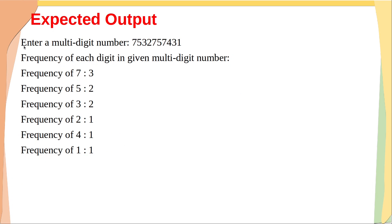The expected output: once you print 'enter a multi-digit number', the user enters a number which is read as a string. Then the frequency of each digit is printed. For example, frequency of 7 is 3 because 7 appears three times, frequency of 5 is 2, frequency of 3 is 2, and frequency of 2, 4, and 1 are each 1, because each appears only once.